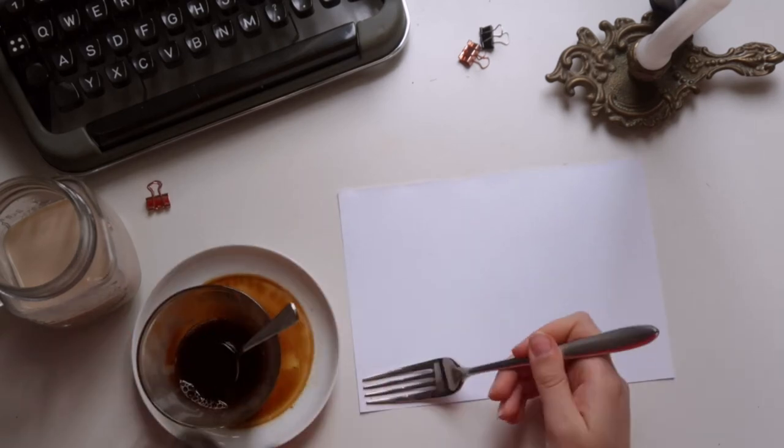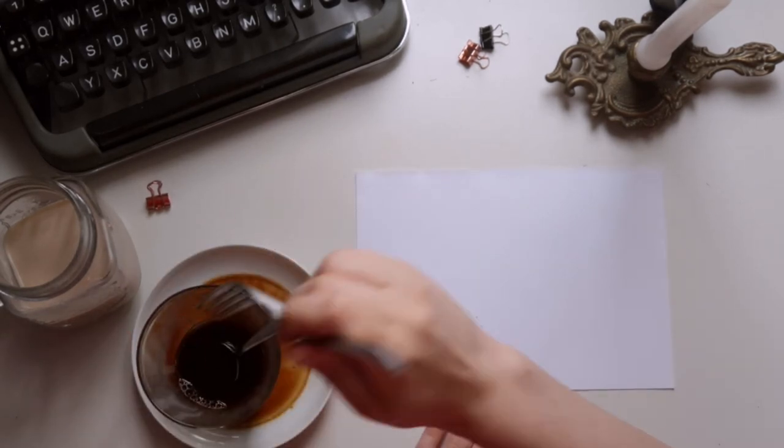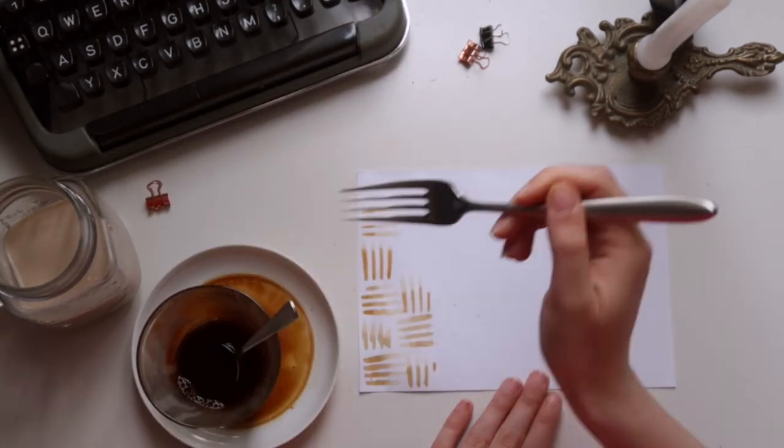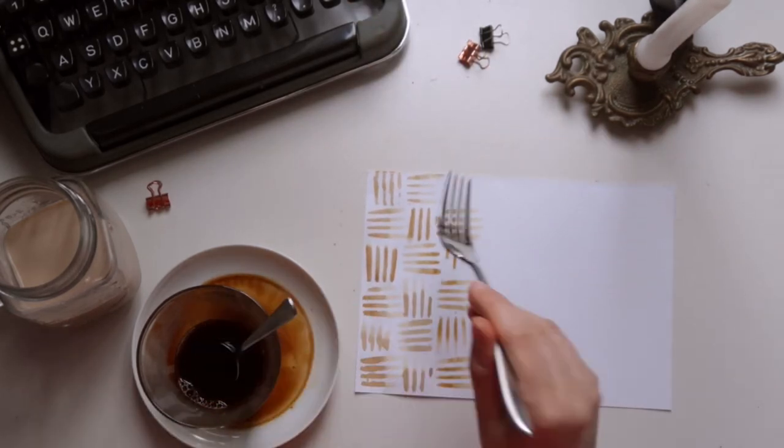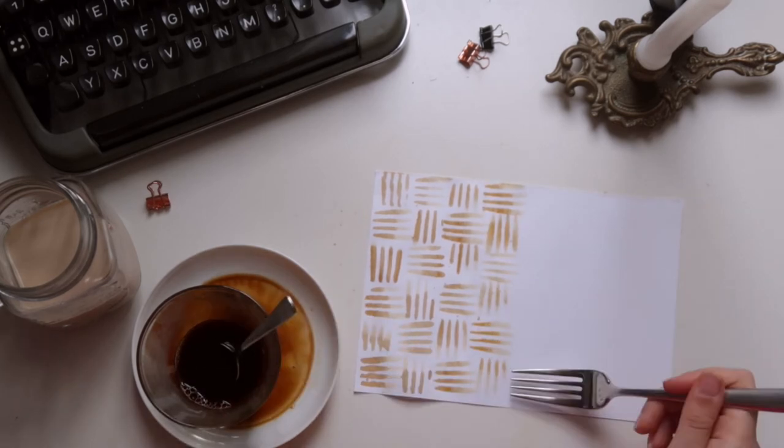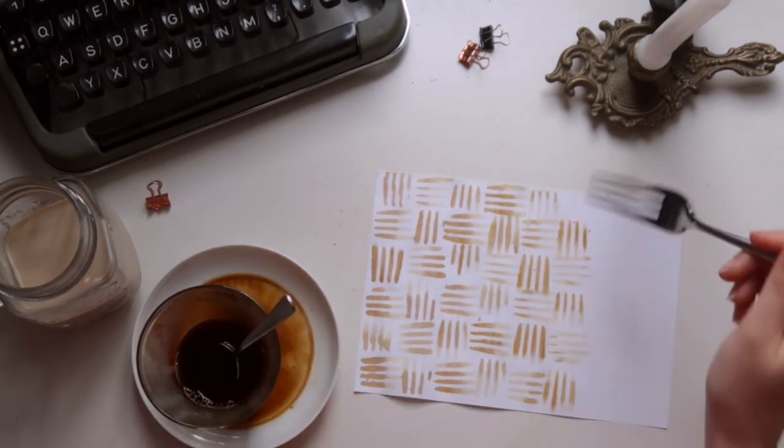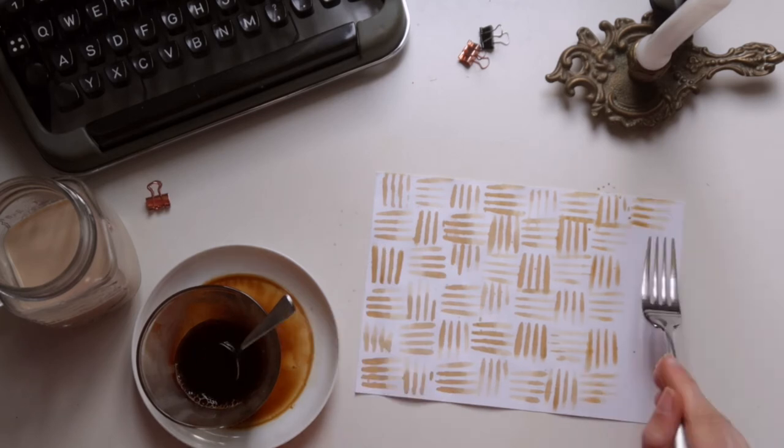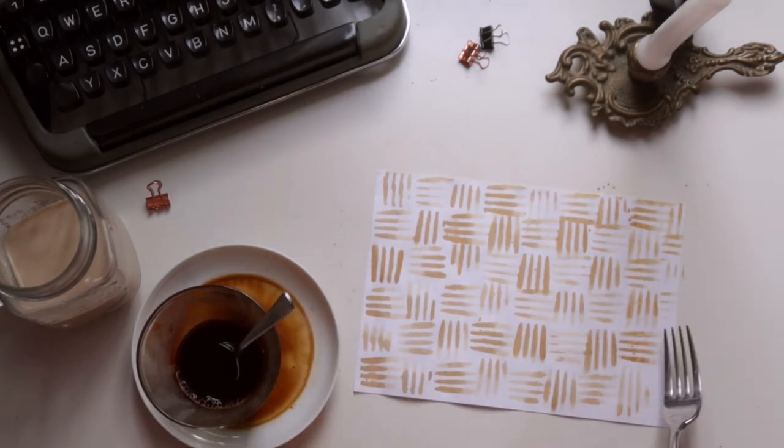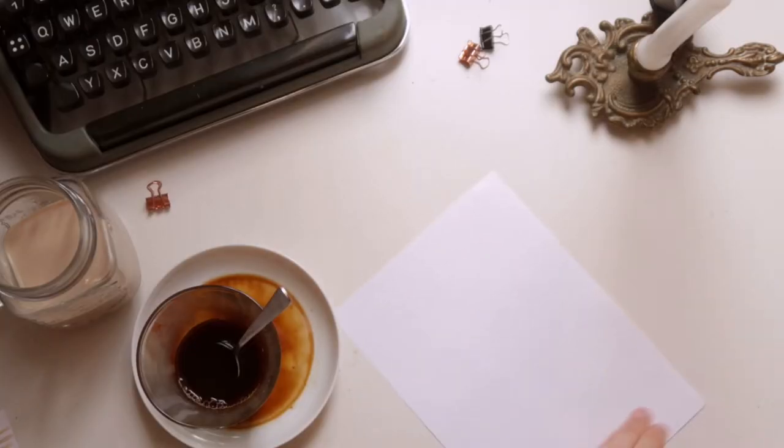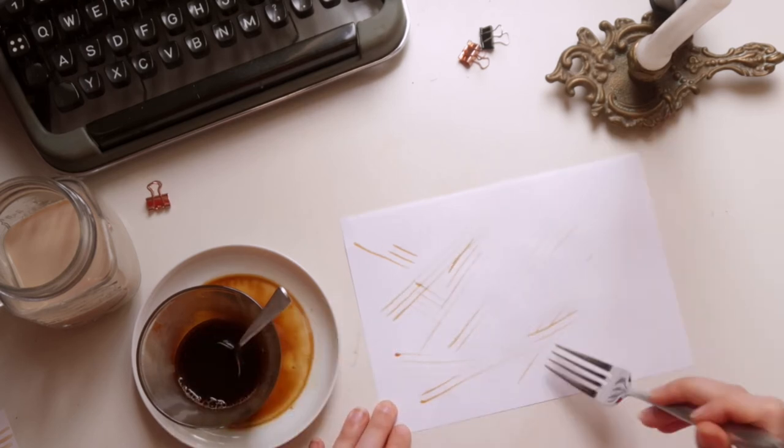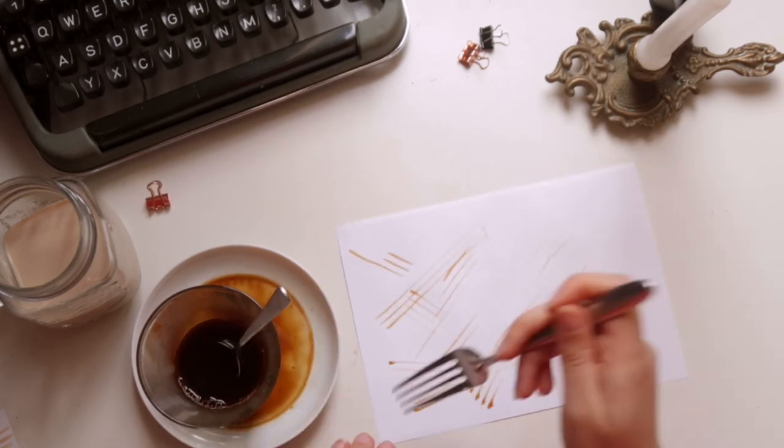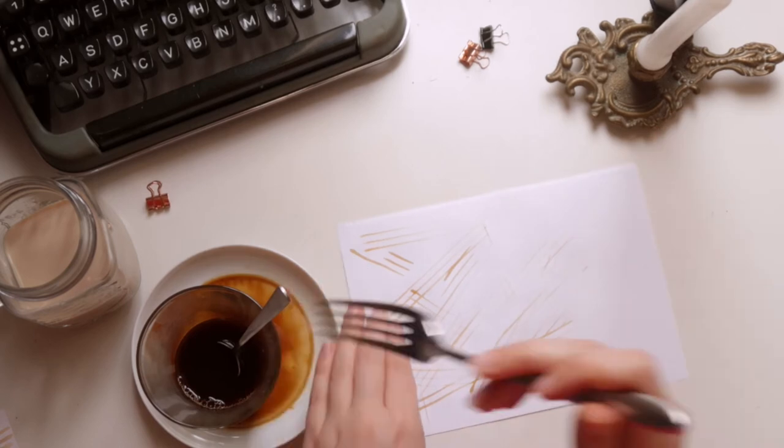Now onto two different patterns you can create with a fork. Dip the fork into the coffee and create this checkered pattern with it. Or create the absolute wild opposite by moving the fork in criss cross motions all over the page for a wild line pattern.